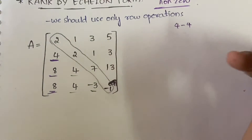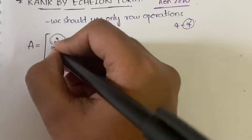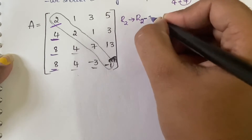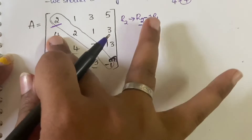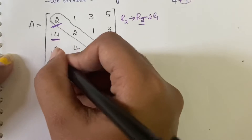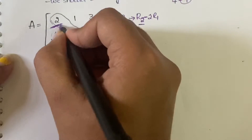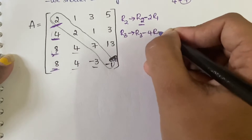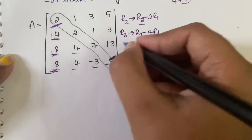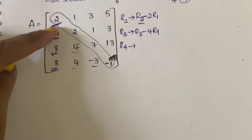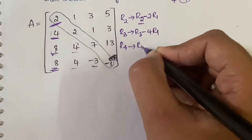In order to make 4 into 0, we need 4 minus 4. We can get this by doing R2 = R2 minus 2*R1, since 2 times R1's first element is 2 into 2 = 4. To make 8 into 0, we need 8 minus 8 — so 4 into R1 gives us that, meaning R3 = R3 minus 4*R1. Similarly for R4, since its first element is also 8, we apply R4 = R4 minus 4*R1. Don't worry about the other elements in those rows for now — our first goal is just to make these three first-column elements 0.